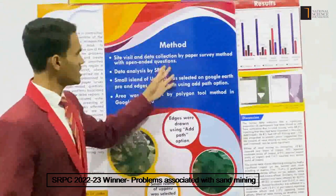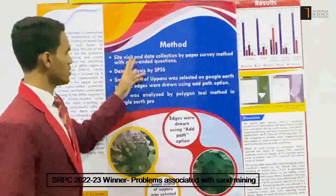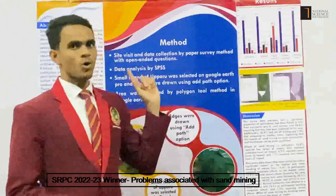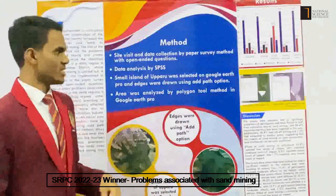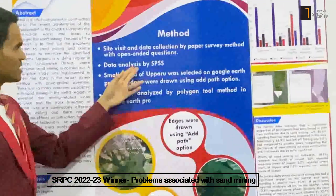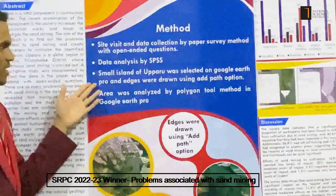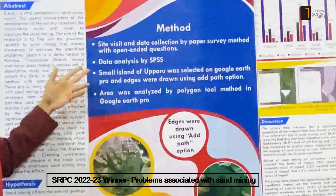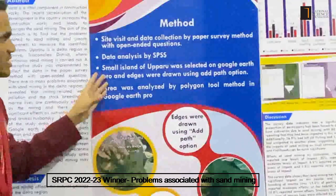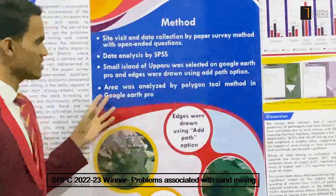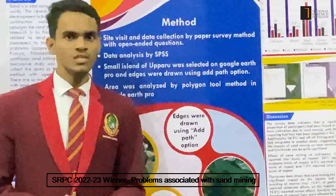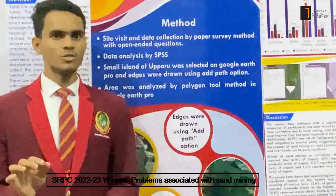In my qualitative methodology, I have used the paper survey method with open-ended cushion and analyzed those data by SPSS. Then, from the quantitative one — which is the important part of my research — I have used modern technology: Google Earth Pro.